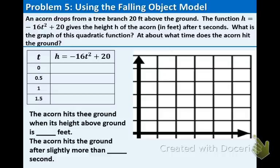Example 5. Here's an application problem. An acorn drops from a tree branch 20 feet above the ground. The function h equals negative 16t squared plus 20 gives the height h of the acorn in feet after t seconds. What is the graph of this quadratic function? At about what time does the acorn hit the ground? First we want to pick some t values: 0, 0.5, 1, and 1.5.